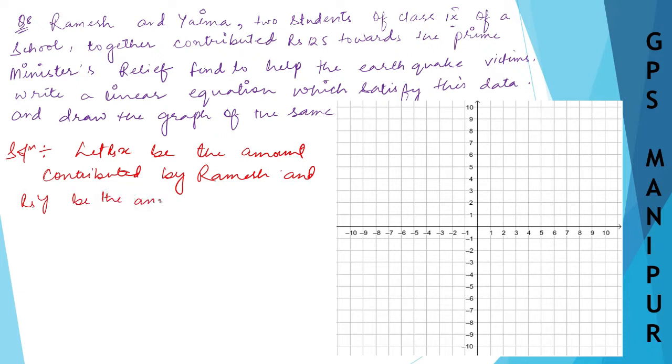Therefore, we know Yaima and Ramesh both together contributed rupees 125. So from the equation, the amount contributed by Ramesh plus the amount by Yaima will be equal to 125. So x plus y equals 125 is the equation.